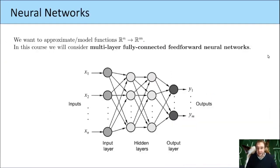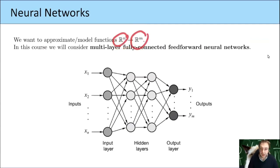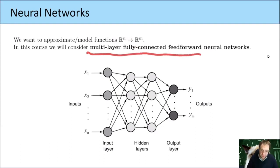What is the basic idea? In general, what we want to do — as we also did before, for example in linear regression — is approximate some functions. In the linear regression case, we wanted to find a function from R^n to R. But now in general, what we want to model or approximate are functions from R^n to R^m. What we will consider in this course are so-called multi-layer, fully connected, feed-forward neural networks. When I say neural networks, I usually mean this.